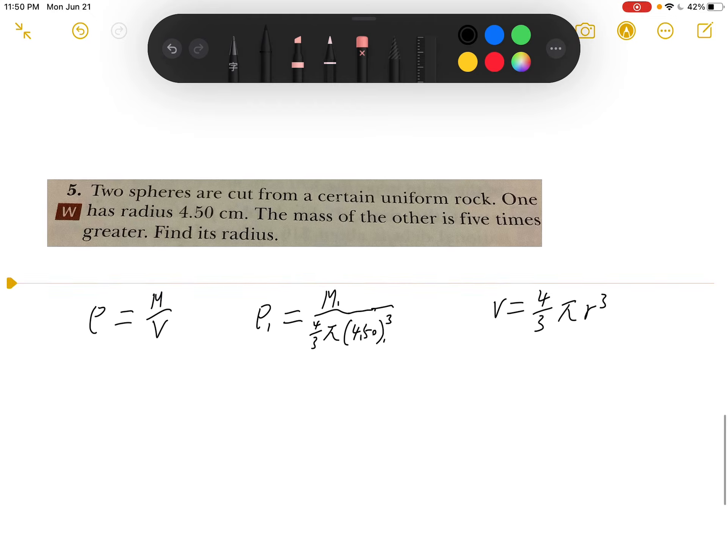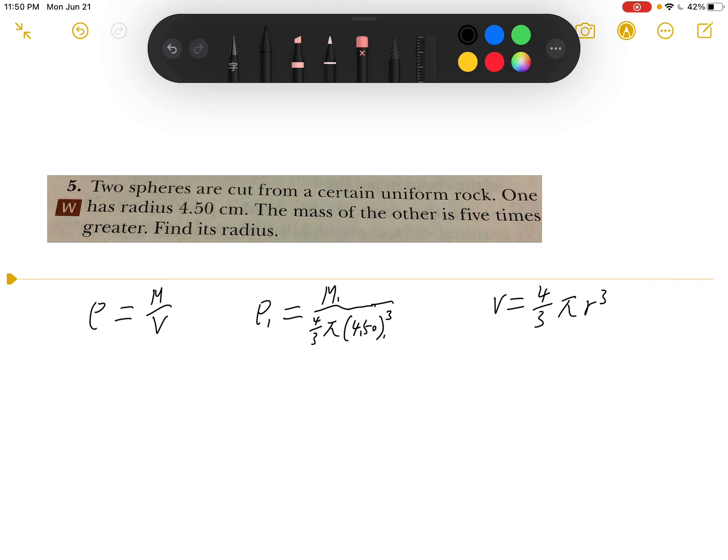We're going to say rock 2, which is rho 2 equals mass 2 over 4/3 pi r2 cubed.